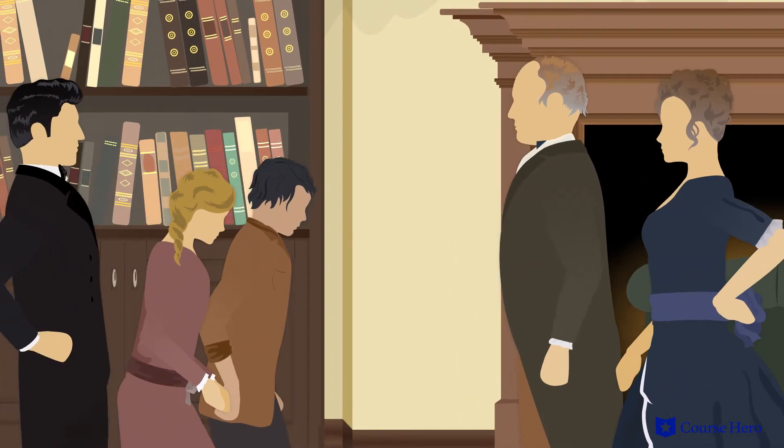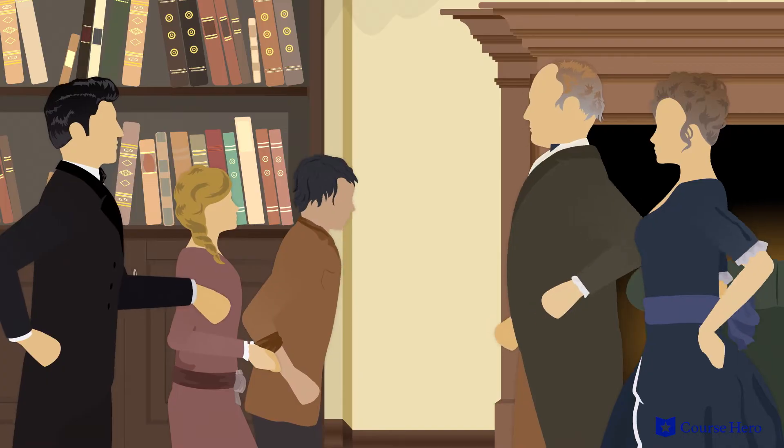One night, Kathy and Heathcliff sneak to Thrushcross Grange to spy on the wealthy Linton children, Isabella and Edgar. When a dog bites Kathy, the children are caught. The Lintons take Kathy in, but send Heathcliff home, rejecting him.